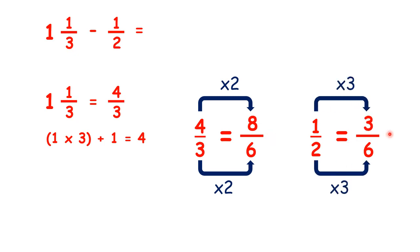So we have 8 sixths minus 1 half, which we changed to 3 sixths. That gives us our answer 5 sixths.